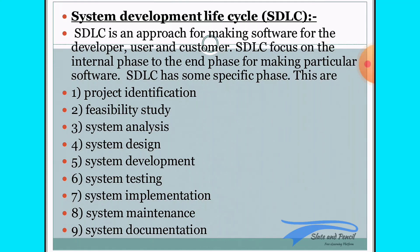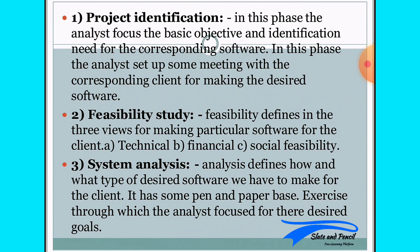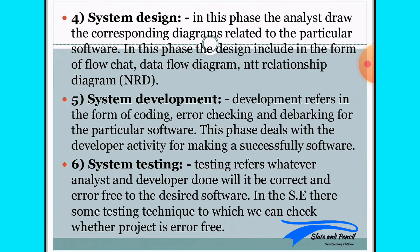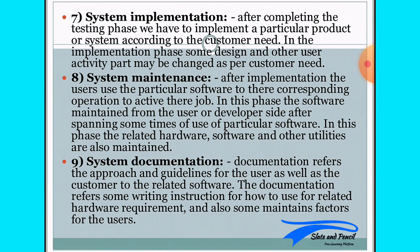In the SDLC, there are phases: project identification, feasibility, system analysis, system design, system development, system testing, and system implementation. After completing the testing phase, we have to implement a particular product or system according to the customer's needs. In the implementation phase, some design and other user activities may be changed as per the customer.